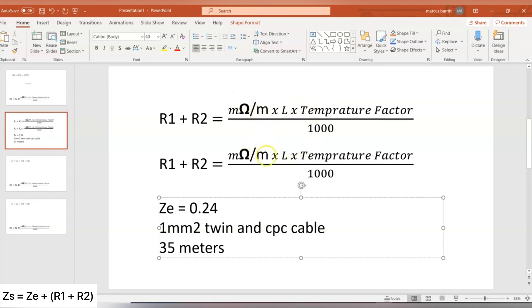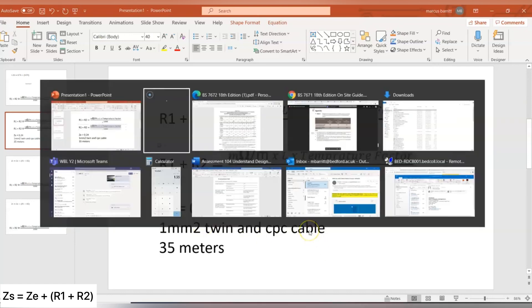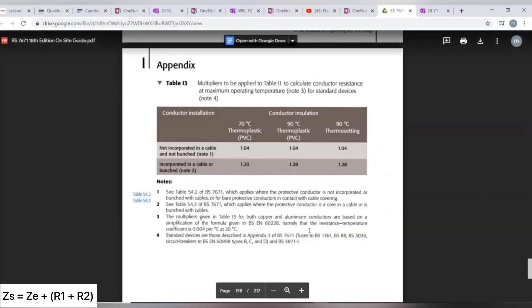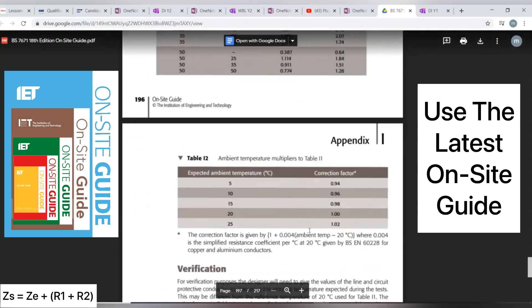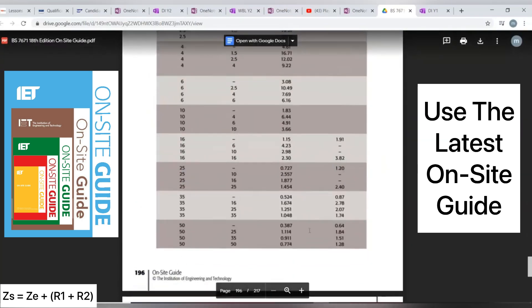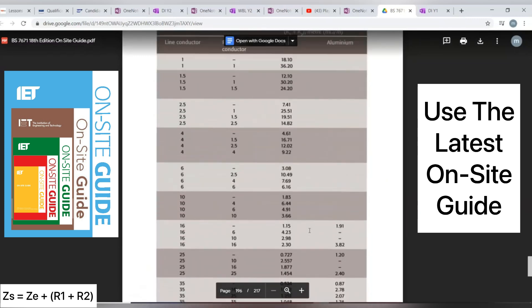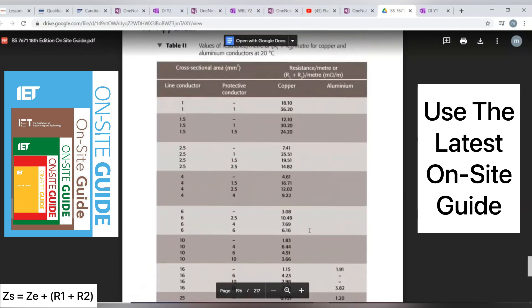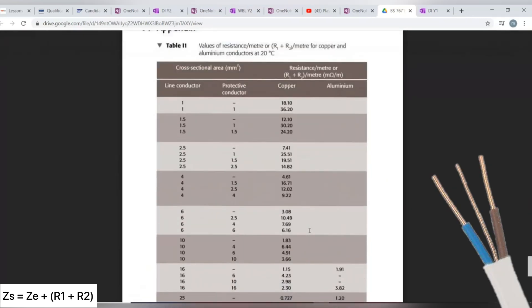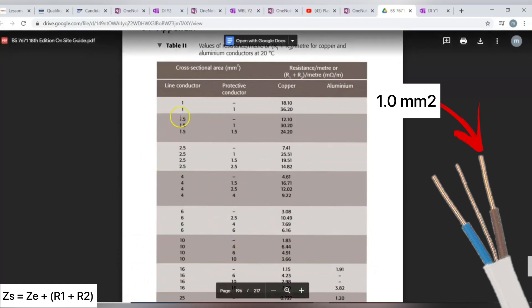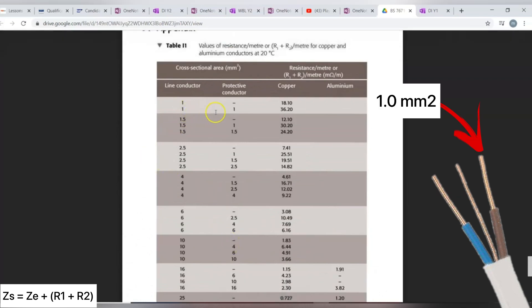We're going to find our milliohm per metre first. Remember we've got a 1mm squared twin and CPC cable. So we go back to Appendix I of the on-site guide. And we come to table I1, which is on page 196. We know we've got a 1mm squared PVC-PVC twin and CPC cable, therefore the line conductor is 1mm squared, and the protective conductor is also 1mm squared.